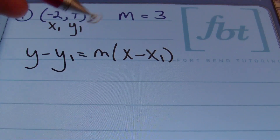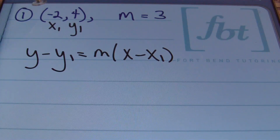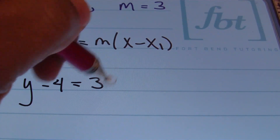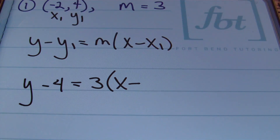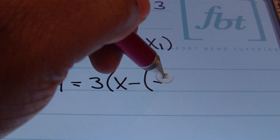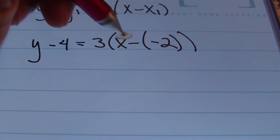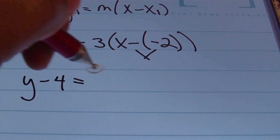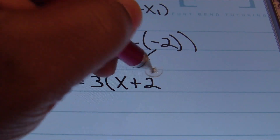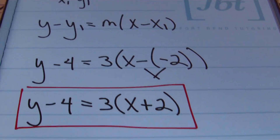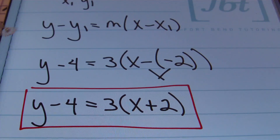Using the formula y minus y1 equals m times x minus x1, we plug in x1 as negative 2, y1 as 4, and slope as positive 3. Rewriting, we have y minus 4 equals 3 times x minus negative 2. Using parentheses to show the negative value, we combine signs to get y minus 4 equals 3 times the quantity of x plus 2. This is the point-slope form — no need to solve for y.